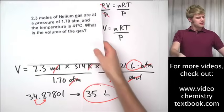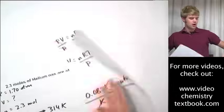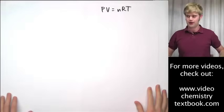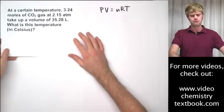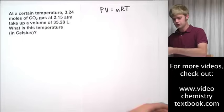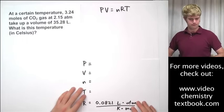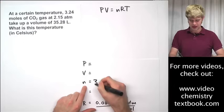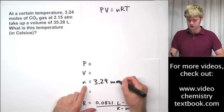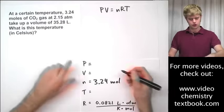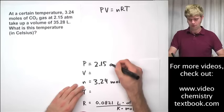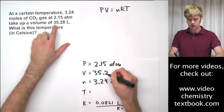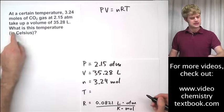Okay? Let's take a look now at what happens when R is on the bottom of the fraction. So, we'll do a similar problem, but I'll show you how to deal with R in this situation. Okay? And what I'll do is I'll just go ahead and fill in these variables as we go. All right? At a certain temperature, 3.24 moles of CO2, so that's our n, how much gas, 3.24 moles of gas are at a pressure of 2.15 atm. And they take up a volume of 35.28 liters.